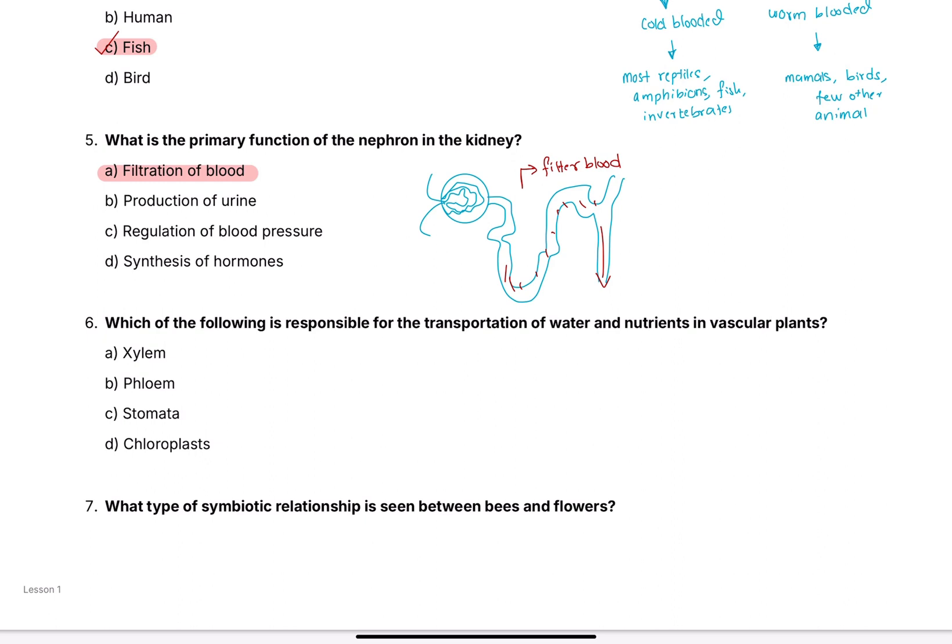When we talk about what's the primary function of the nephron in the kidney, production of urine is also the right answer, but the main job here is the filtration of blood because it is during that filtration of blood that urine is basically eventually produced. You can perhaps say that A and B are kind of both correct. The nephron is responsible for the filtration of blood and the production of urine by removing waste products and regulating electrolyte balance. I would say there are two correct answers over here. I kind of perhaps would have made a mistake while making this question, but the nephron is responsible for both of these things.